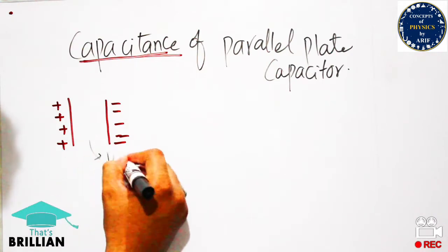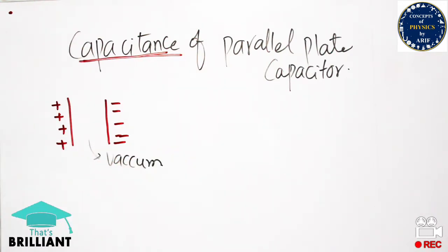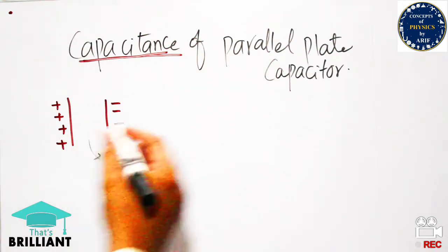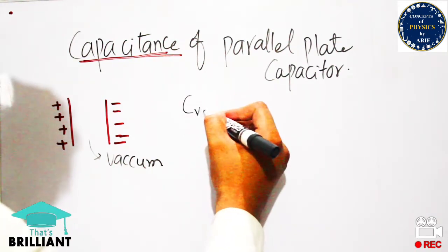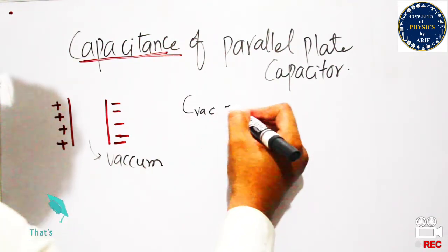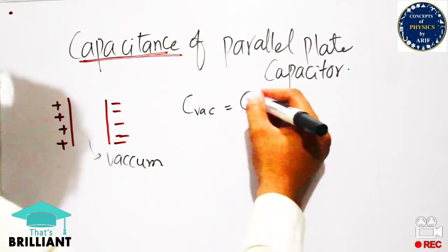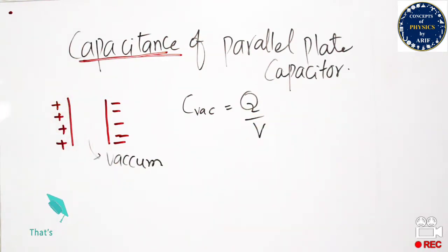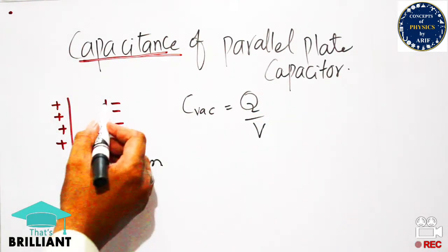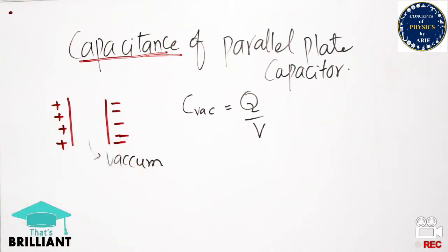First, we will consider the case of vacuum in order to understand the capacitance of a parallel plate capacitor. Capacitance has the simple formula C = Q/V.